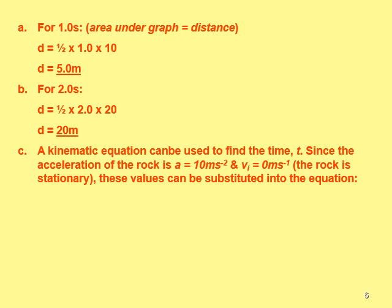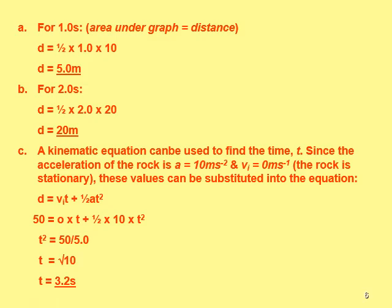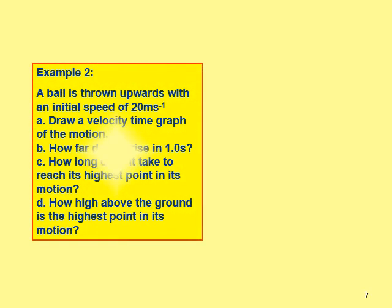Donald falls about 5 meters in the first second, and 20 meters after two seconds — half times 2 times 20. A kinematic equation can then be used to find time t. Since acceleration is 10 m/s² and initial velocity is zero, substituting into d = vi·t + ½at²: 50 = 0·t + ½·10·t², so t² = 10, giving t = √10, approximately 3.2 seconds until he hits the ocean surface.